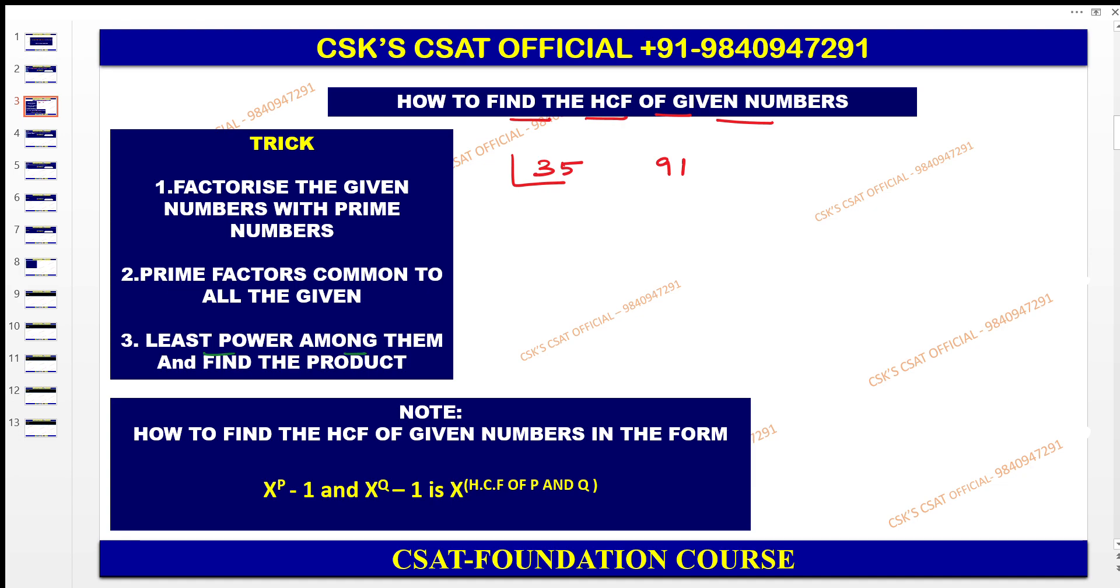Then you can do the prime factorization. Here 35 is not divisible by 2, then not divisible by 3. Let us go with 5 here, then 7, then 1. Here 35 which is equal to 1 × 5 × 7. Factors of 35 you have found here by doing the prime factorization.